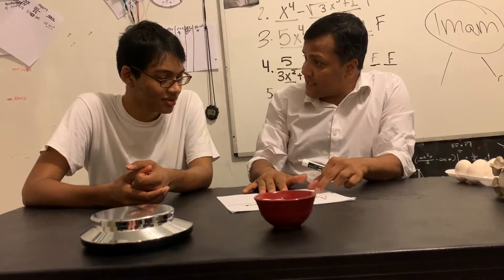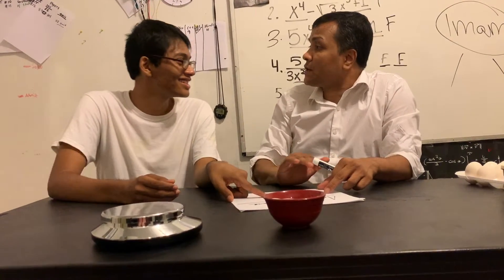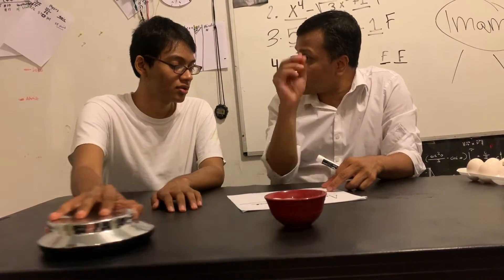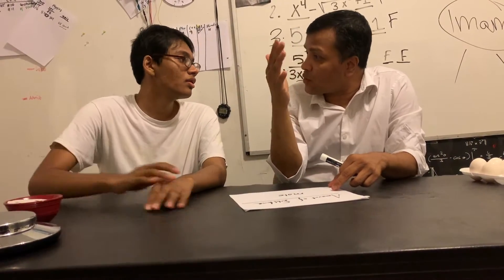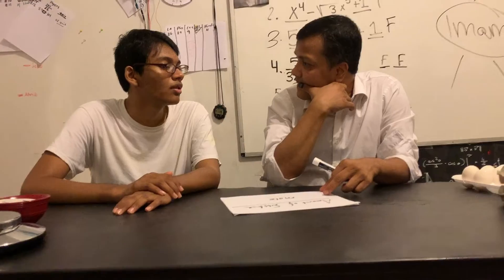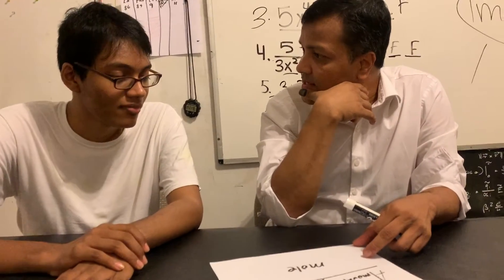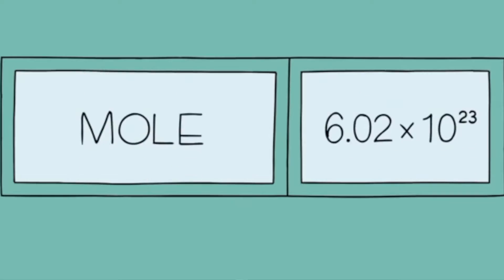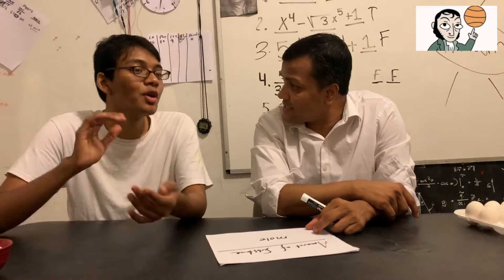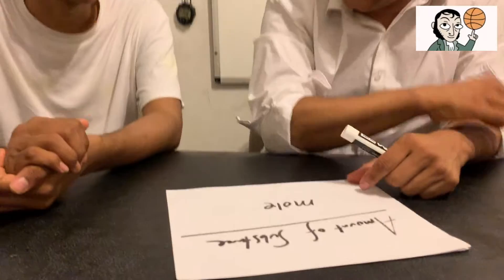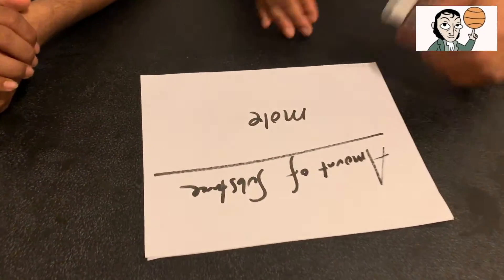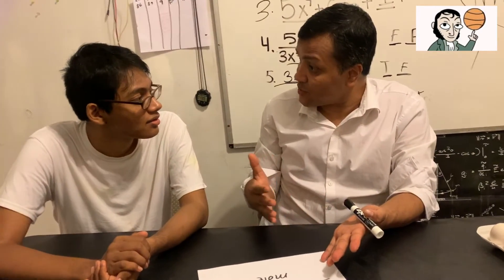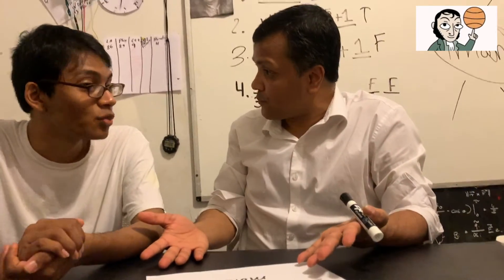Mole is a constant — it's a number, not the animal. For example, 3.14 is a constant you can call pi. Instead of 2.718, you can call it e. So instead of 6 times 10 to the 23, you can call it one mole. So 6 times 10 to the 23 eggs is equal to one mole.